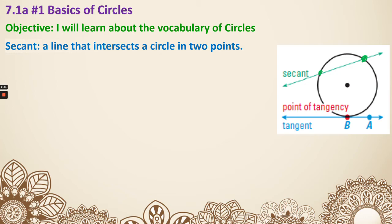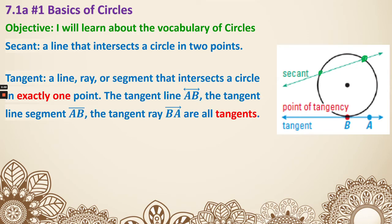Next, the opposite of that - we have something that only touches the circle at one point, and that is called a tangent. There's a line, ray, or segment that intersects the circle at exactly one point. The tangent line AE represents a line. The tangent line segment AB, we use a line segment to represent. The tangent ray - all of these are called tangents.